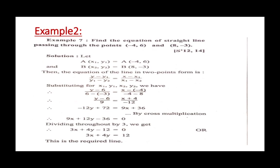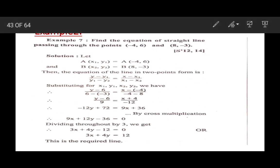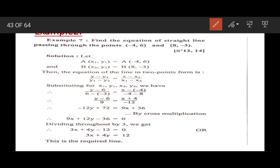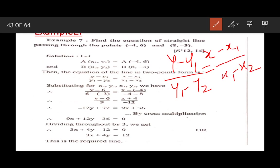The second example is: find the equation of a straight line passing through the points (-4, 6) and (8, -3). Two points are given, so we use the formula: y minus y1 upon y1 minus y2 equals x minus x1 upon x1 minus x2. Here x1 = -4, y1 = 6, x2 = 8, y2 = -3.